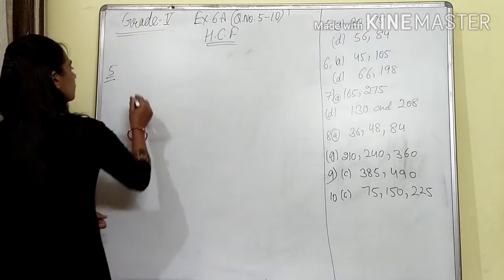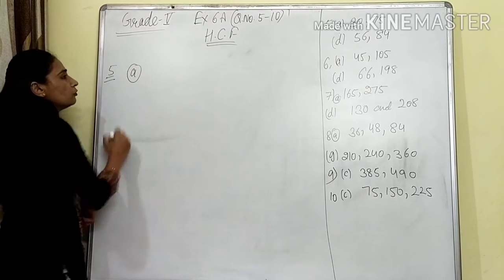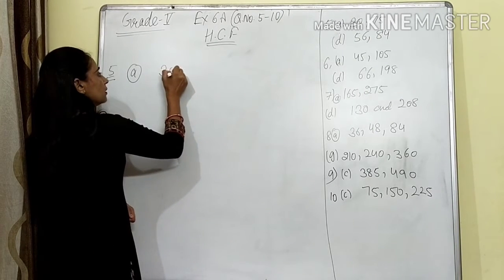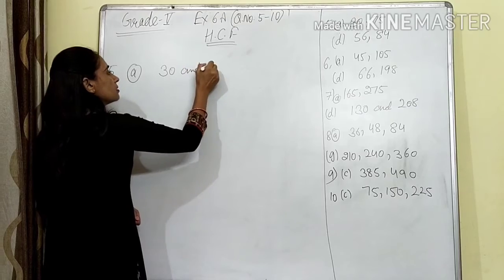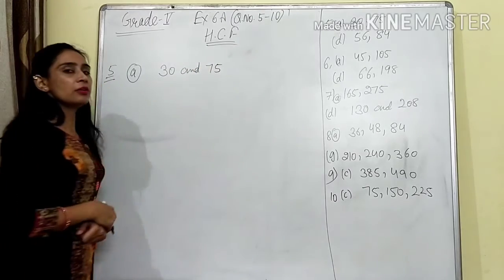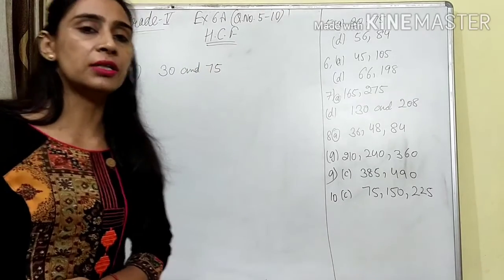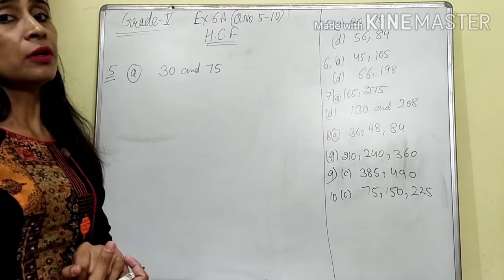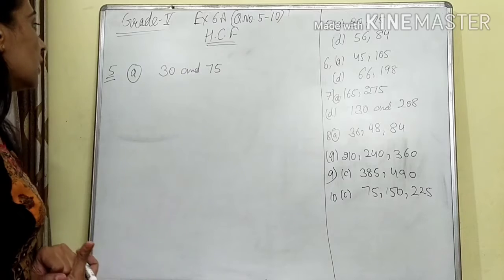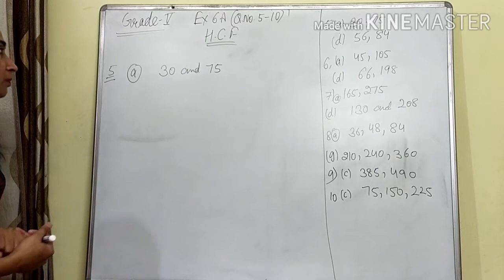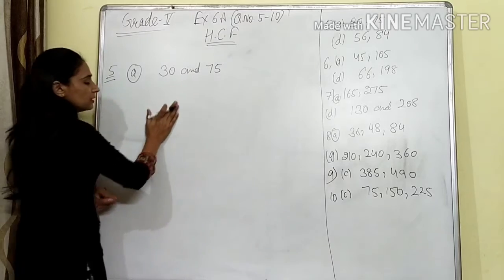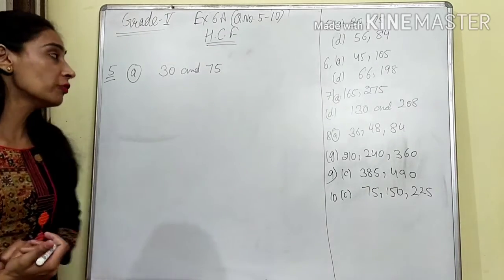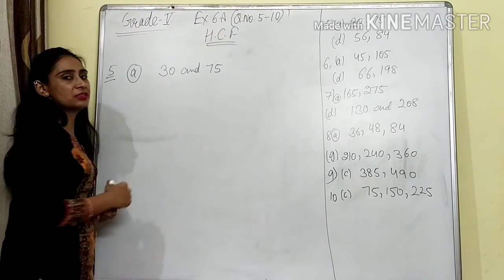Question number 5, first part. What is given? It is given to us 30 and 75. Here we have to find out the HCF by using prime factorization. Before the HCF, first we will learn how to do the prime factorization. Prime factorization is a method in which we find out the prime factors of each and every number separately.